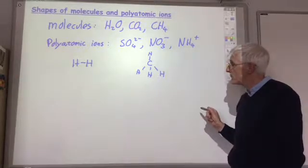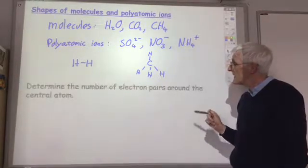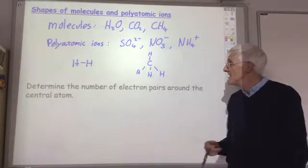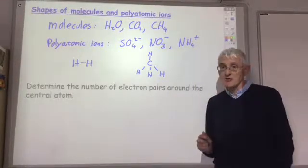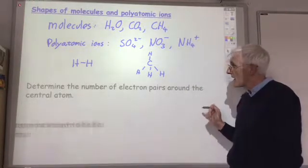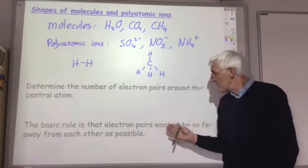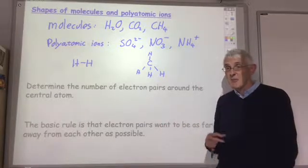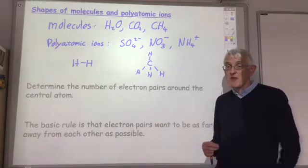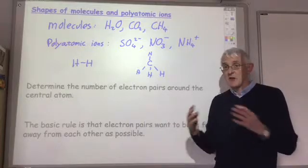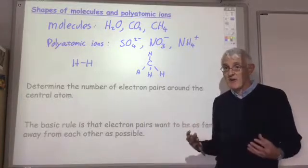What is the major factor in determining the shape of the molecule is the number of electron pairs around the central atom. And the thing to remember is that the electron pairs want to be as far away from each other as possible because they repel each other. Because one electron pair is negative, the other electron pair is negative, they repel each other and get as far away as possible.